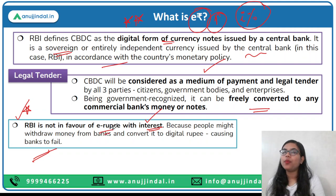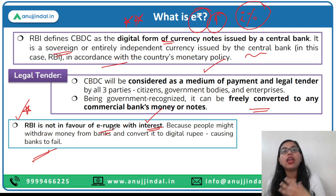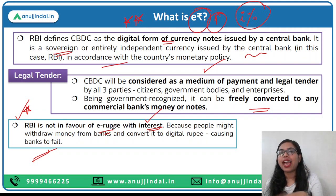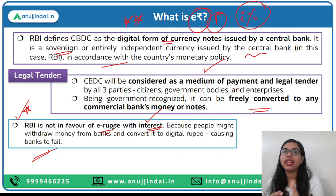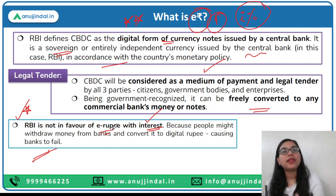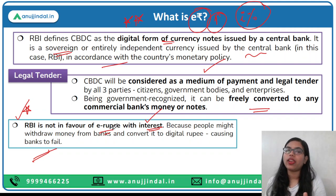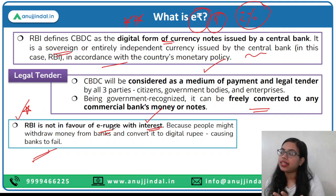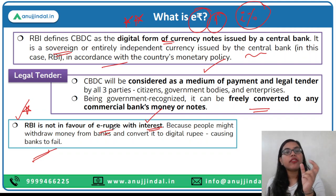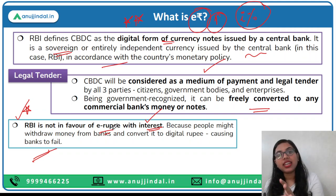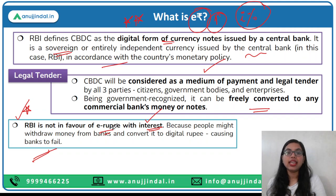Why no interest on E-rupee? If RBI wants to encourage acceptance of E-rupee and provides interest as an incentive, people will convert all their physical cash into E-rupee. In that case, the banks around the country could fail — because people would no longer keep physical cash with banks. Therefore, RBI is not in favor of introducing any kind of interest or incentive on E-rupee. If incentive is provided, it will become very difficult for the banking system to survive in India.